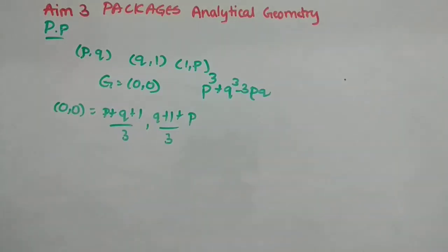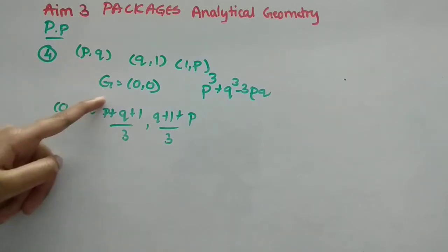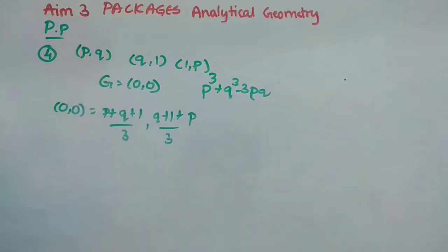Now we have to see 4th one. So this is the 4th one solution. So first, they have given us 3 points: P, Q, 1, 1, P. And they have told that the centroid is origin. Origin means (0,0). So we have to find P³ plus Q³ minus 3PQ. Clear?